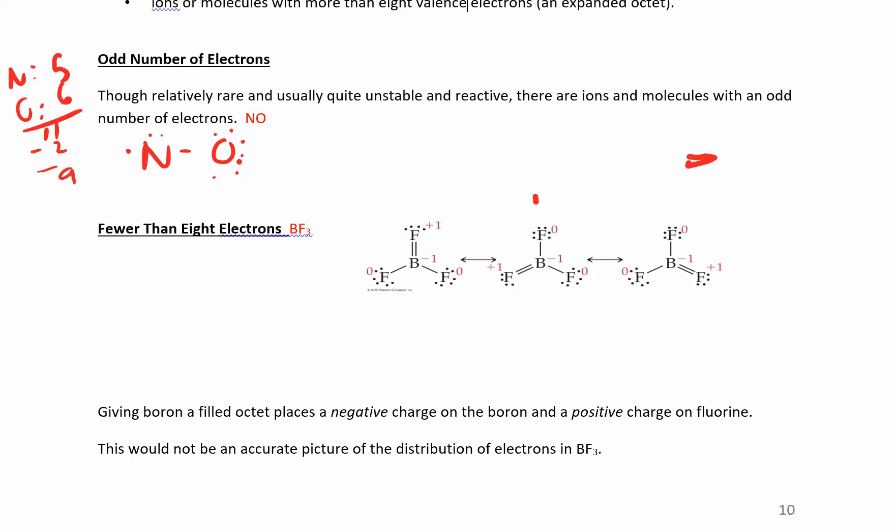Nitrogen is not happy there. So you can take off two of these electrons and share them instead. And now oxygen still has two, four, six, eight. And now this nitrogen has two, four, six, seven. That's about as good as it's going to get.